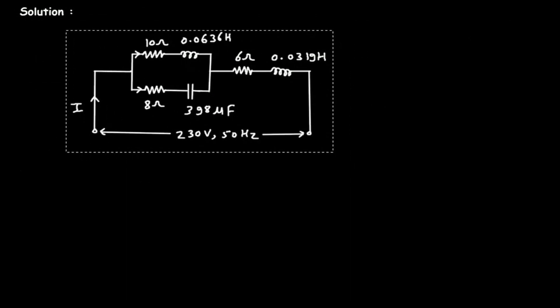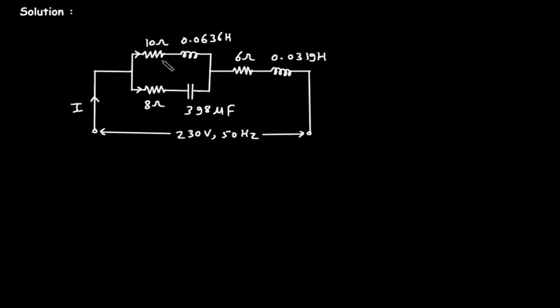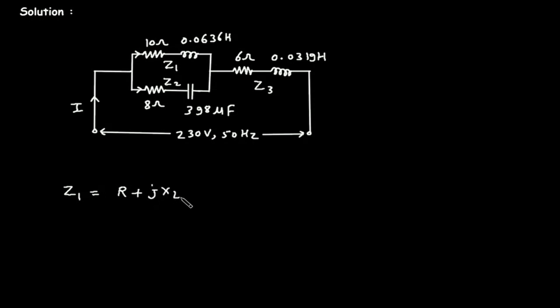Let's define the impedances. This R and this L is impedance Z1. This R and this C is impedance Z2, and this R and this L is impedance Z3. Z1 is equal to R plus jXL.